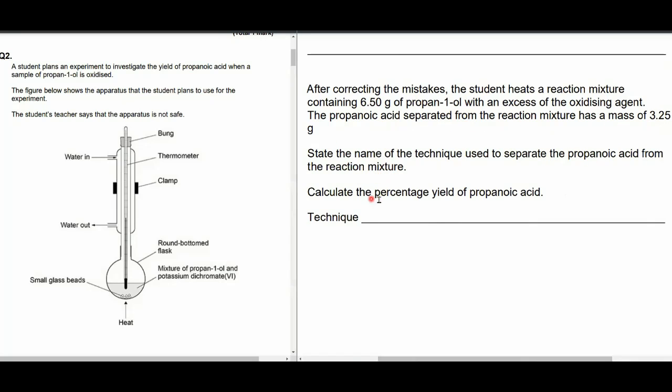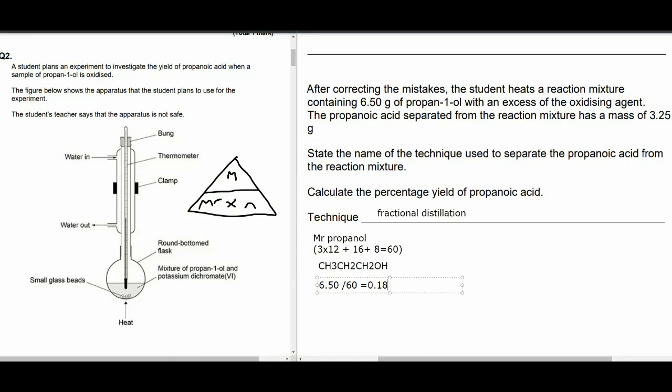Now we're on to the next part. And it says, calculate the percentage yield of propanoic acid in the particular technique used. Now, if we go through and we look at the specifics here, after correcting the mistakes, the student heats a reaction mixture containing 6.50 grams of propan-1-ol with an excess of oxidizing agent. The propanoic acid is separated from the reaction mixture. It has a mass of 3.25 grams. State the technique used to separate the propanoic acid from the reaction mixture so we can use distillation or fractional distillation. And then it asks us to calculate the percentage yield. Well, the first thing to do is work out the MR of propanol because we've been told how much propanol we started with, which was 6.5 grams. If we can work out the moles of propanol we started with, we can work out the moles of propanoic acid and the mass of propanoic acid that we should get, the maximum mass or theoretical mass. We can then do the yield equation with our actual mass of 3.25 grams.